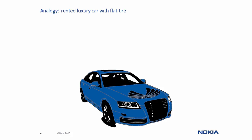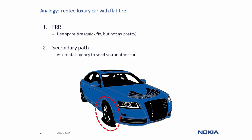Let's explain secondary paths and Fast Reroute using the example of a rented luxury car. Suppose that you are driving along the highway and suddenly get a flat tire. At that point, you have two options. You can use the spare tire, which is a quick solution that allows you to continue driving to get to a safer place. However, by using the small spare tire, the car does not look as luxurious as before. That is what Fast Reroute represents. The other option would be to call the car rental office and ask for another car, which will come as nice and shiny as the original one. The drawback is that you need to wait far longer to have your problem solved.